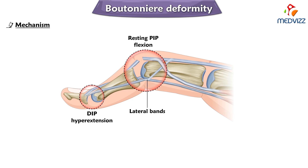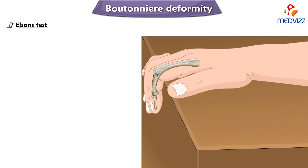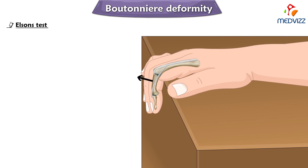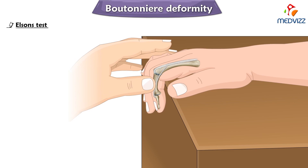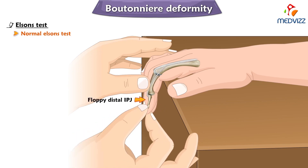It is also very important to know about Elson's test. To perform it, position the patient's proximal interphalangeal joint in 90 degrees of flexion — this keeps the central bands taut and the lateral bands loose. Ask the patient to extend the proximal interphalangeal joint while the provider's finger applies counter force at the middle phalanx. In the normal Elson's test, this results in active extension of the PIP joint and a floppy distal interphalangeal joint.